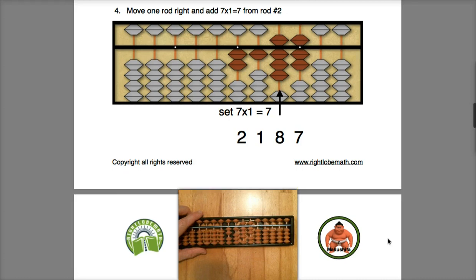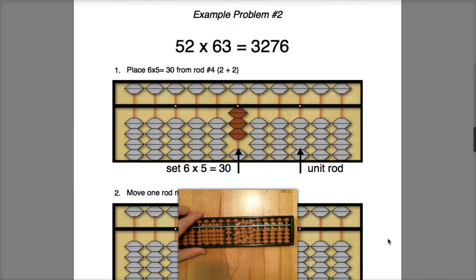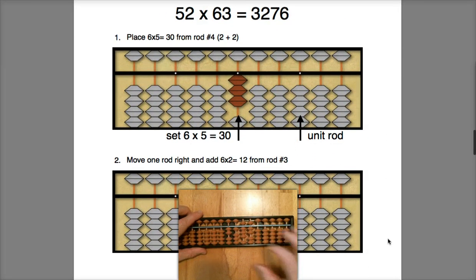Hopefully that was pretty straightforward. Let's go ahead and take a look at a second example problem. Again, I have four digits, so I count off one, two, three, four. I'm going to do the first multiplier digit 6. Six times 5 is 30, so I enter 30.